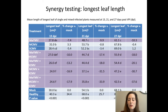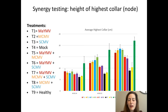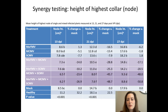We then looked at different measures of stunting. The longest leaf length showed the stunting was most severe in the MLN treatments, but there was certainly significant stunting whenever the polero virus was present — this virus on its own and in combination with other viruses absolutely caused stunting. Another measure, the height of the highest collar or node, gave really similar results: the greatest stunting was observed in treatments where we expected MLN — MCMV plus SCMV — and then that treatment with polero virus added in. There was also significant stunting in double infections when the polero virus was in combination with others, so it did seem to exacerbate stunting.